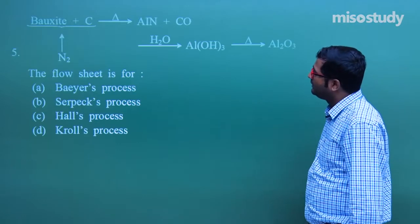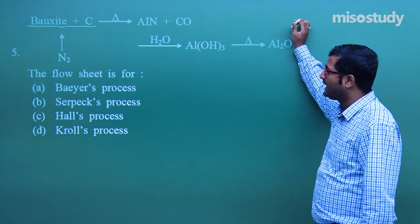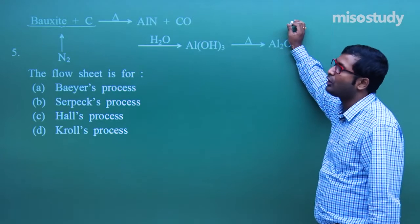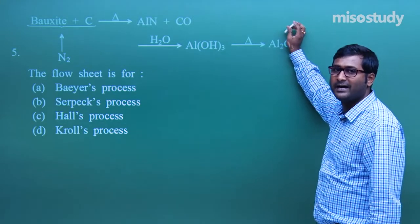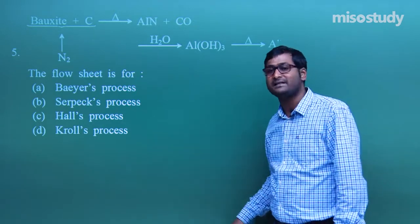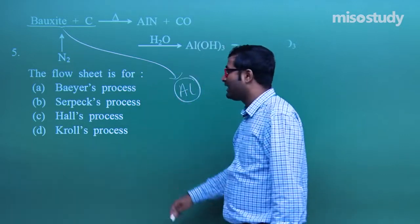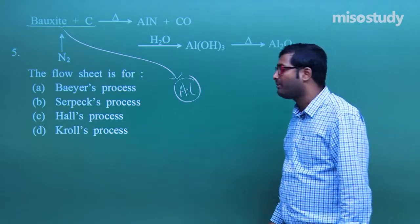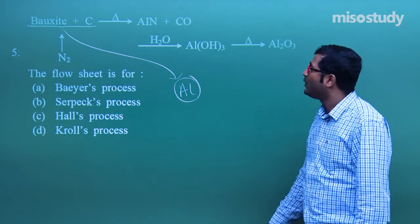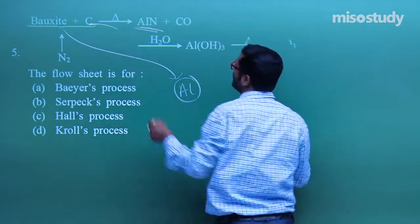Question number 5 is about extraction of metals. Bauxite is the ore — not of calcium but of aluminium. Methods of extraction of aluminium include the Bayer process, Serpic process, and Hall process. When bauxite (Al₂O₃) is treated with carbon it forms aluminium nitride. We eventually get pure aluminium through further treatment, and this is the Serpic process.